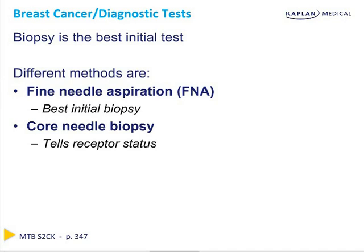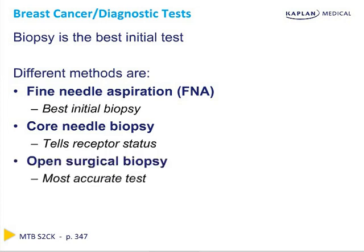Core needle biopsy provides more tissue and allows detection of estrogen and progesterone receptors as well as the HER2 receptor, which are important for prognosis and treatment. However, the larger needle can be more deforming and carries a small risk of seeding the needle tract with tumor cells. If the question asks for the most accurate diagnostic test, the answer is open or surgical biopsy, which obtains the most tissue. The patient goes to the OR under general anesthesia, the biopsy is sent for frozen section, and if cancer is confirmed, tumor resection is done immediately.